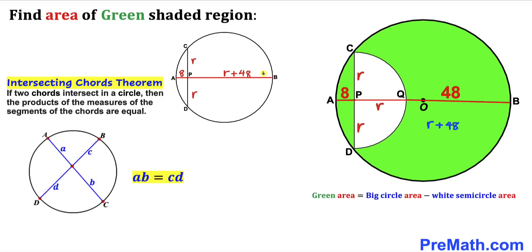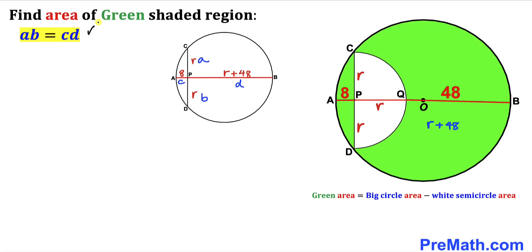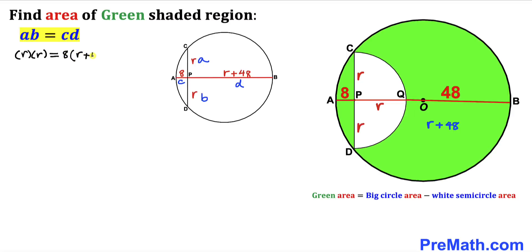In our case, AB and CD are the two intersecting chords. Let me label the segments as A, B, C, and D. So filling in the equation: our A is r, B is r as well. Our C is 8 and D is r plus 48. So I can write r times r equals 8 times (r plus 48).